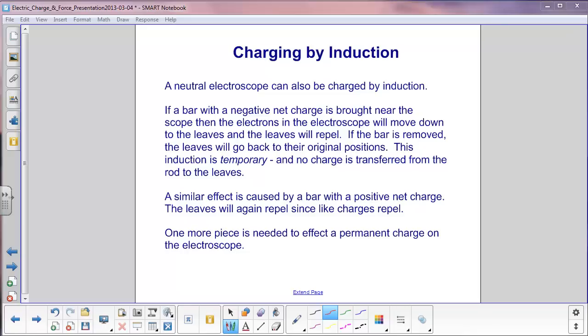A neutral electroscope can also be charged by induction. For example, if a bar with a negative net charge is brought near the scope, then the electrons in the electroscope will move down to the leaves and the leaves will repel.